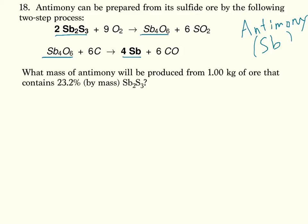So what mass of antimony will be produced from 1.00 kilograms of ore? Let's change that to 1,000 grams to make our life a little bit simpler here. That contains 23.2% by mass of Sb2S3. So 1,000 grams of ore is just a rock that comes out of the ground. And so what it's saying is 23.2% of that rock is actually Sb2S3. So we're not actually starting with 1,000 grams. We're starting with 23.2% of 1,000 grams.